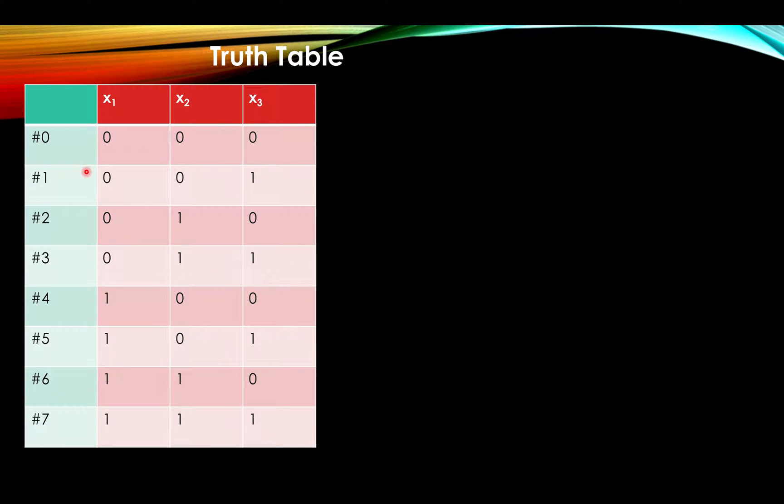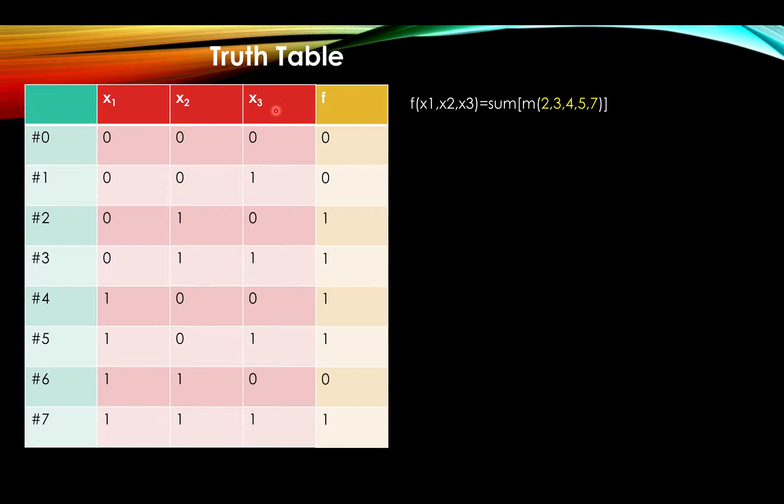For the truth table we have here numbered 0 to 7 in decimal and binary. Here we have x1, x2, x3, our three variables. And the problem gives us this list 2, 3, 4, 5, 7, which is where every row is true, as I have here.